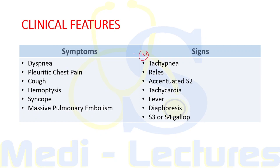The patient with pulmonary embolism can be absolutely normal, but usual signs include tachypnea — the most common, present in 96 percent of patients — rales heard in around 58 percent, accentuated S2 sound seen in 53 percent, and other signs such as tachycardia, fever, diaphoresis, and S3 or S4 gallop. Other signs include lower extremity edema, murmur, cyanosis, and clinical evidence of deep vein thrombosis.